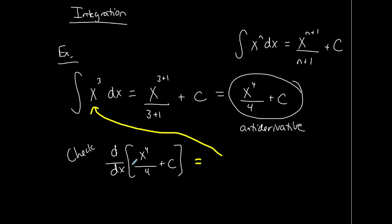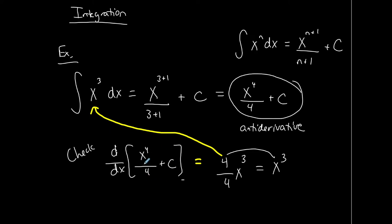Like I said, it's a backwards derivative. So if I find the derivative here — bring the exponent down, 4 over 4, keep the base, subtract 1 from the exponent — the derivative of c, which is a constant, is 0. When I simplify, 4 over 4 is 1, so I get x to the third. What I get from deriving the anti-derivative should match what was next to the integral sign.